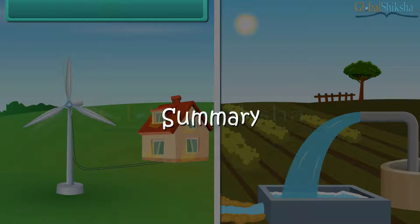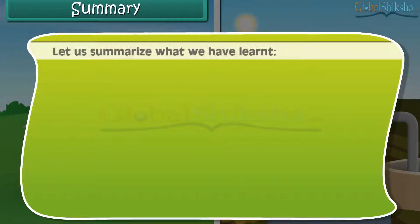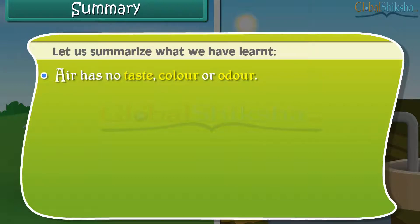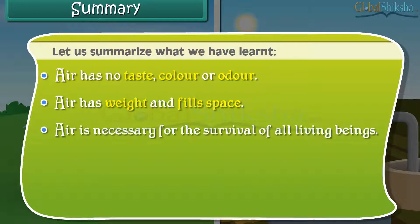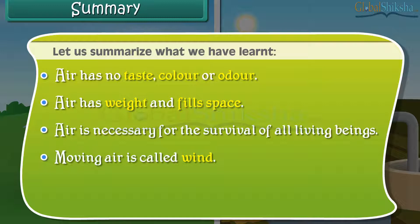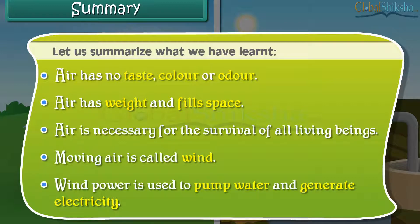Summary. Let us summarize what we have learned. Air has no taste, colour, or odour. Air has weight and fills space. Air is necessary for the survival of all living beings. Moving air is called wind. Wind power is used to pump water and generate electricity.